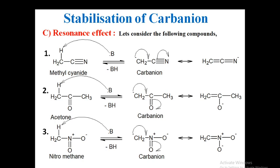Let's go to the resonance effect. Here are some examples showing how resonance stabilizes carbanions. First, methyl cyanide: if you remove the proton by reacting with any base, the resultant carbanion is well stabilized by resonance because the negative charge is in conjugation with the multiple bond, showing delocalization. The negative charge spreads — on carbon in one resonating structure and on nitrogen (a more electronegative atom) in the next — giving additional stability.